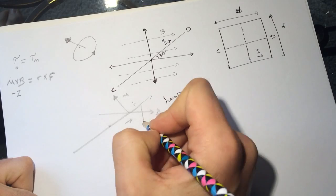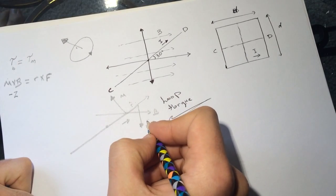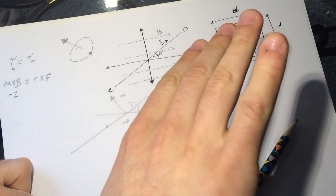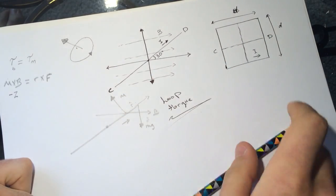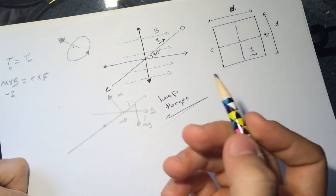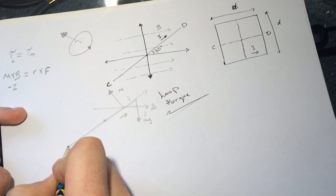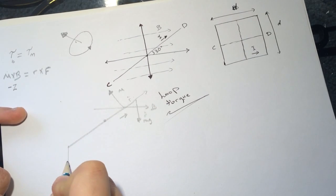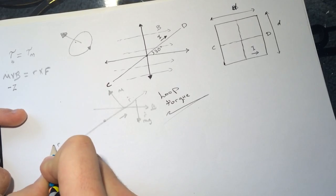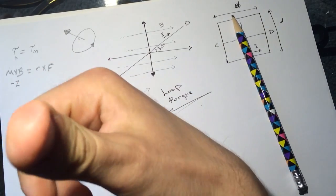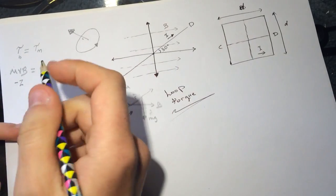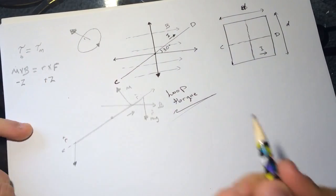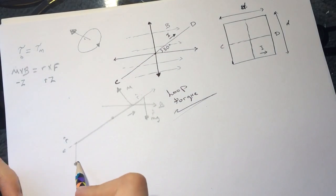Let's see if it's going to be here. Same thing - this is the R vector. So R cross F is going up in the positive Z axis. Okay, so the mass will be here.